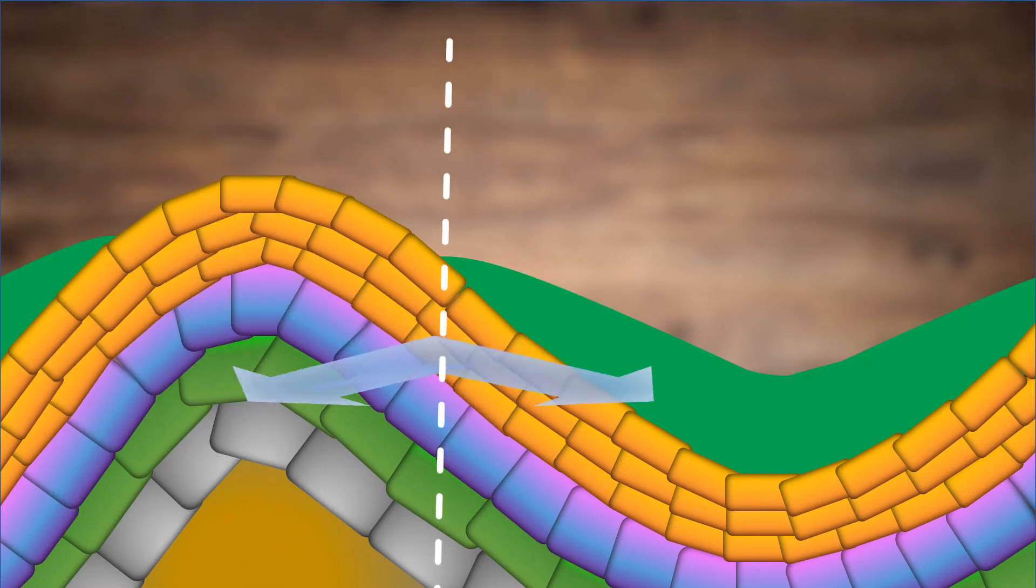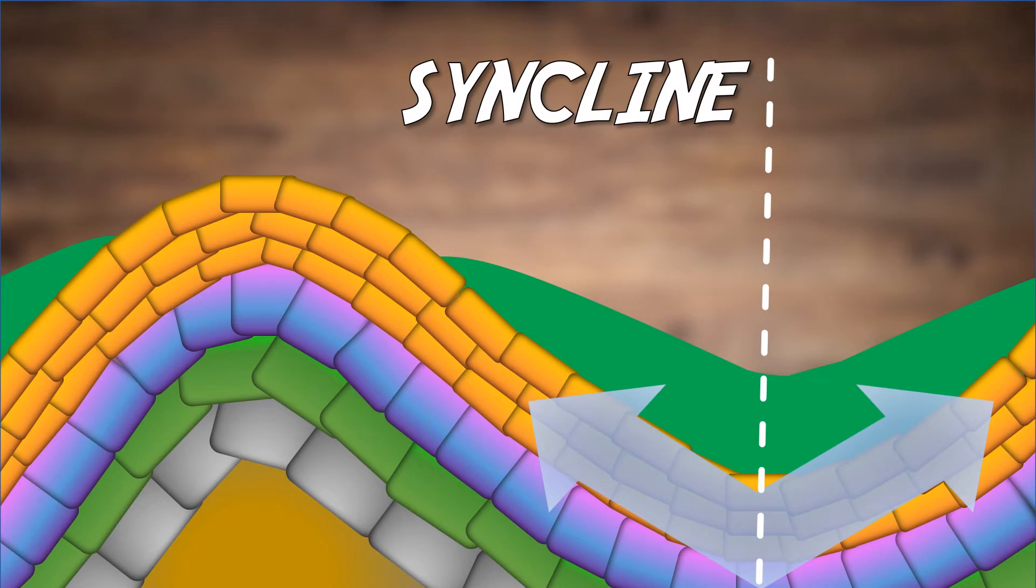When the opposite occurs, and the center line is the lowest point, with upward slopes on either side, it becomes a syncline.